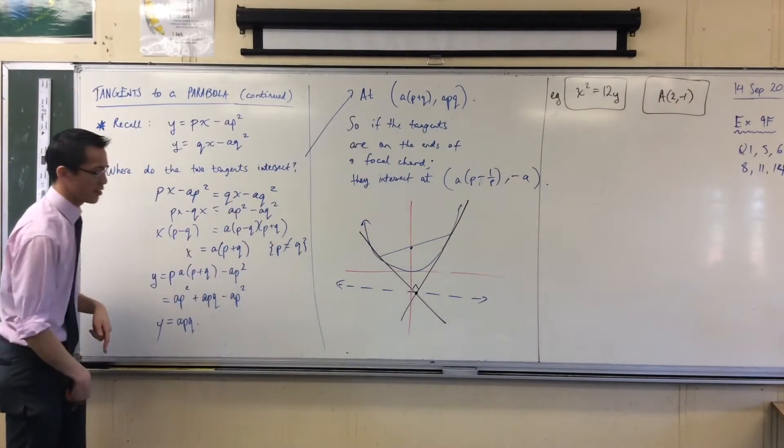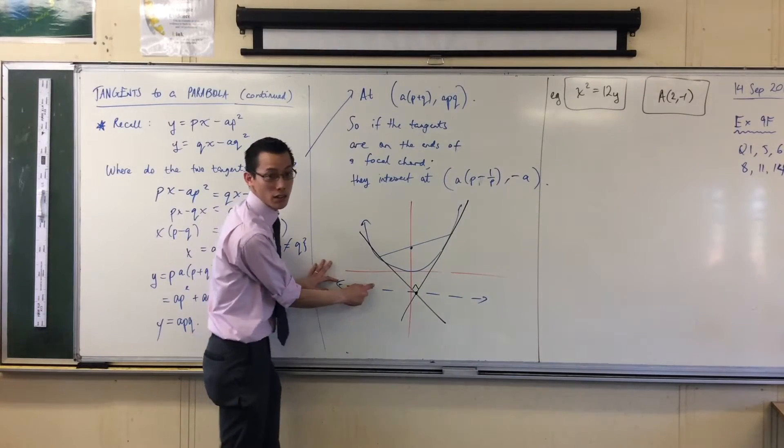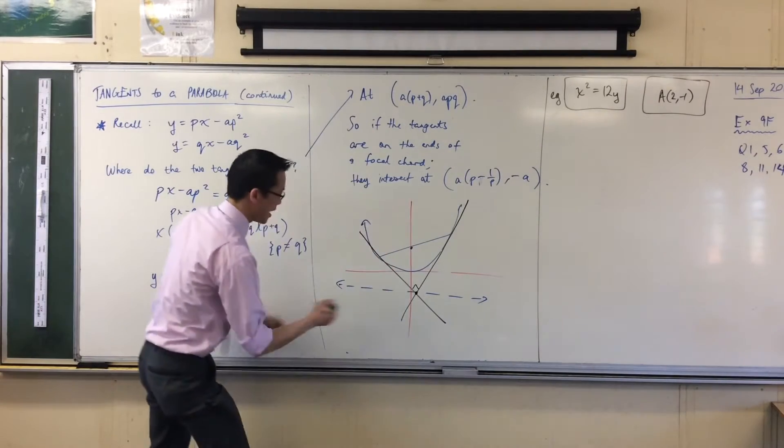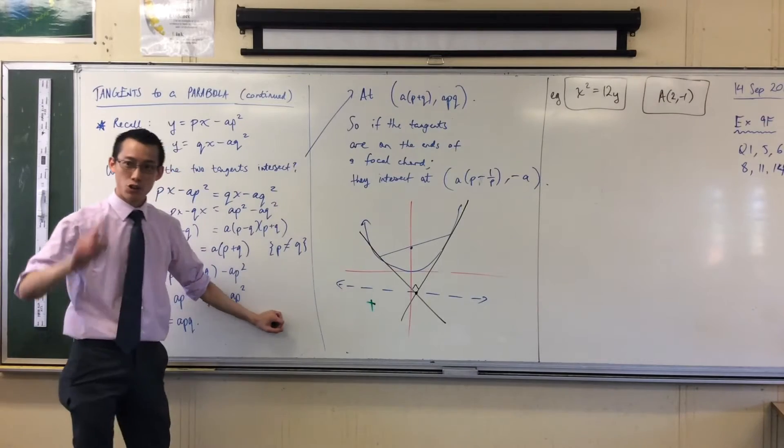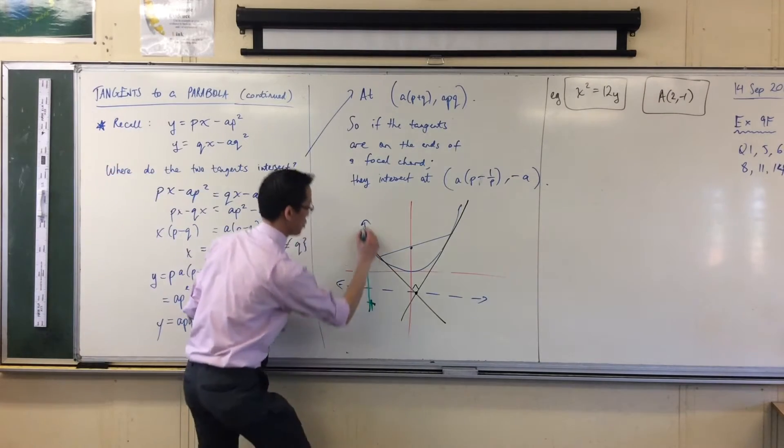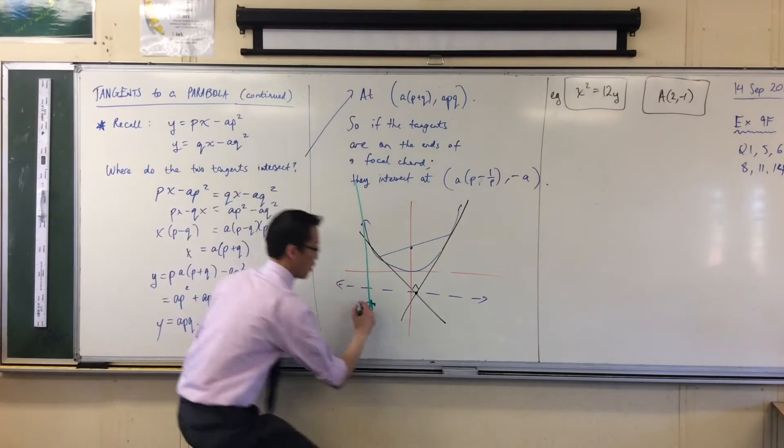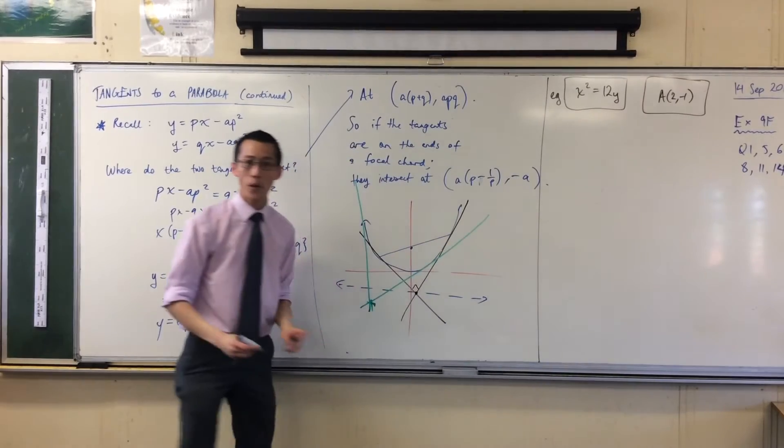Like if I went in the opposite direction, and I said, okay, there's some point over here. You can pick any point you like. For any point outside the parabola, you'll be able to draw one tangent to the closest side, and one tangent to the furthest side. You'll always be able to draw two.